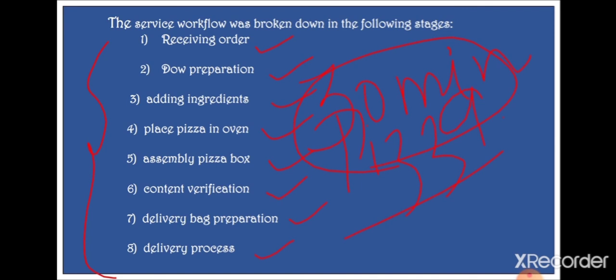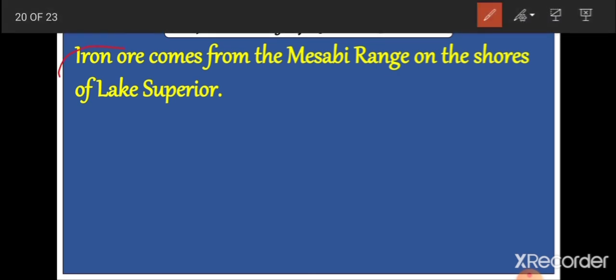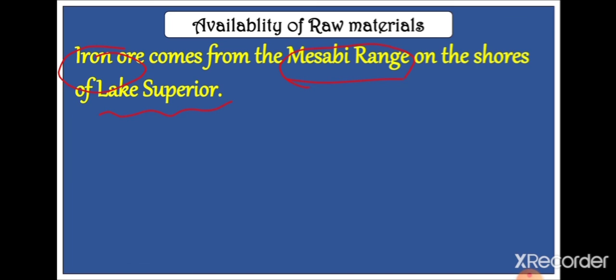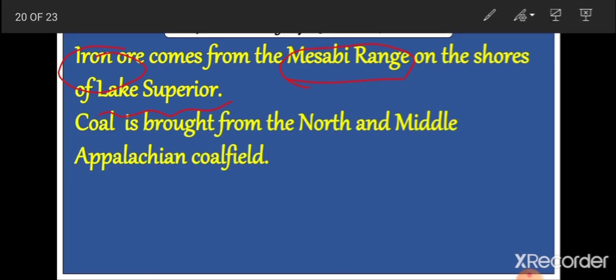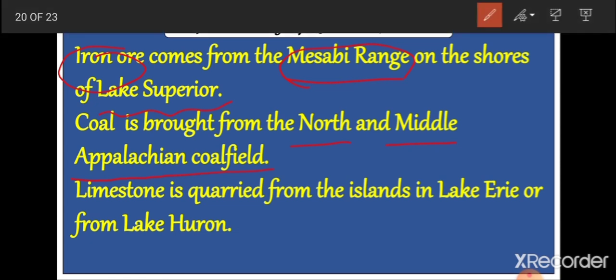Now let us learn what factors encouraged the development of Detroit as the auto capital of the world. First, availability of raw materials: iron ore comes from the Mesabi Range on the shores of Lake Superior. Coal is brought from the North and Middle Appalachian coalfields. Limestone is quarried from islands in Lake Erie and Lake Huron. So iron ore, coal, and limestone are all sourced from nearby regions.